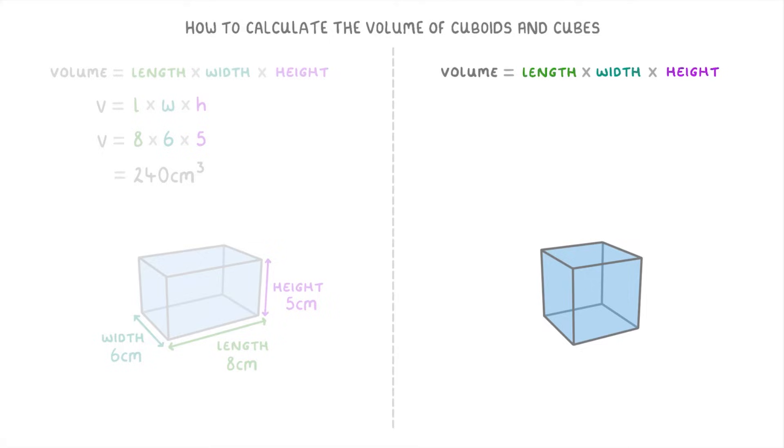The special thing that makes a cube a cube is that the length, width, and height are all exactly the same. So we can actually think of the formula as volume equals length times length times length, or length cubed.